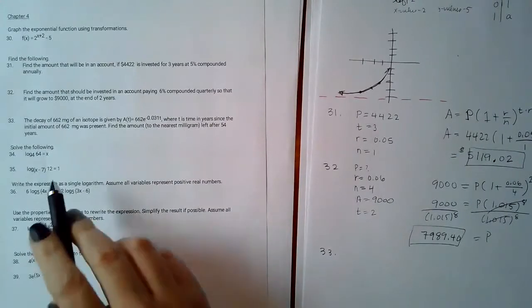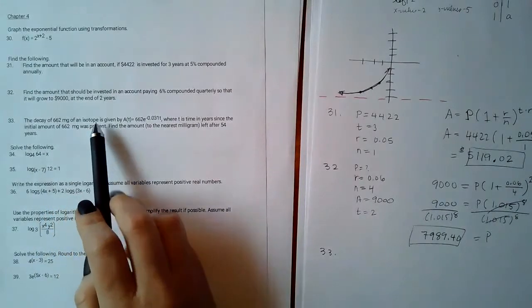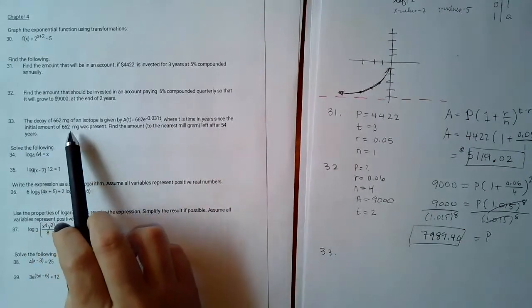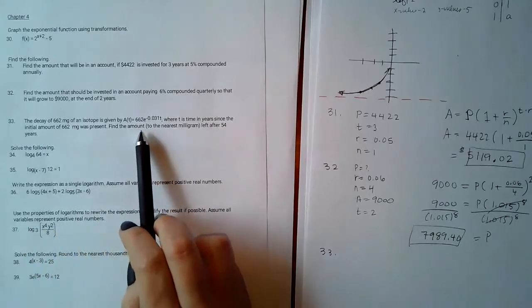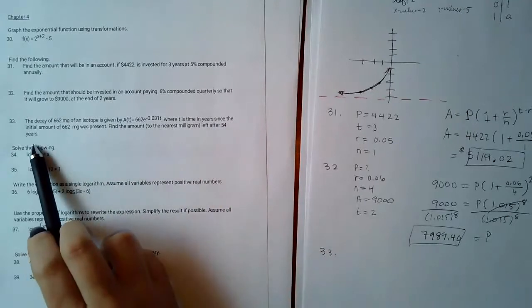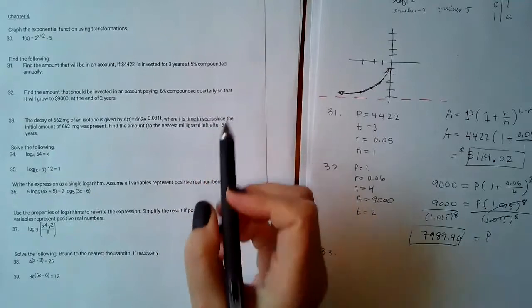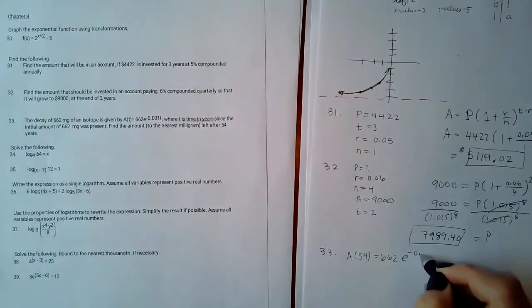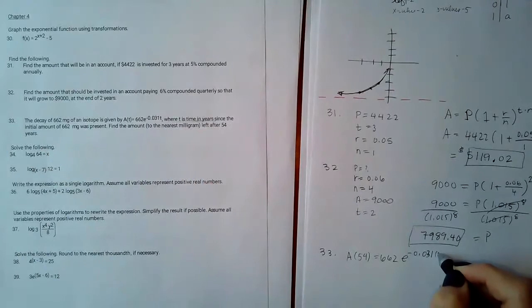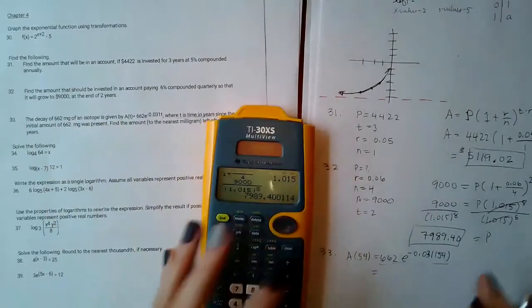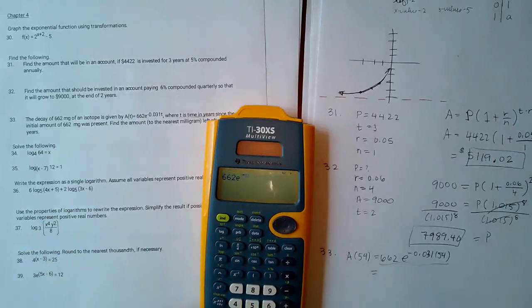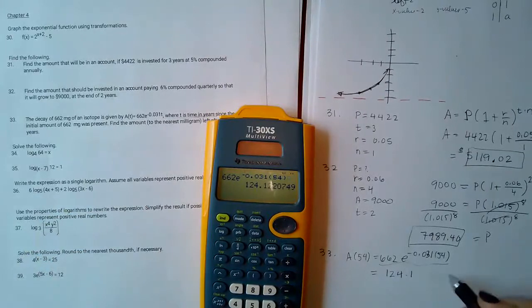Number 33: a decay of 662 milligrams of an isotope is given by an equation where t is the time in years since the initial 662 milligrams was present. Find the amount left after 54 years. Since t is in years, I substitute t equals 54. Typing into the calculator: 662 times e to the power of negative 0.031 times 54, and I get 124.1-something. Rounded to the nearest milligram, the answer is 124.